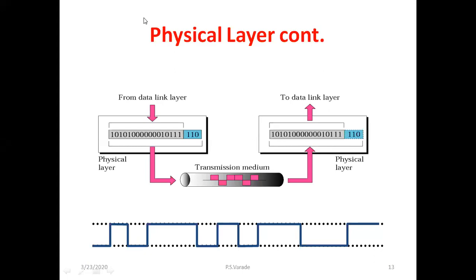A question came up: is the transmission medium part of the physical layer? Transmission medium can be wireless or wired. If you connect a machine with a CAT5 Ethernet cable, that is wired medium. The next chapter covers transmission media in detail. If you use wired medium you do line coding; if wireless you do line coding and modulation.